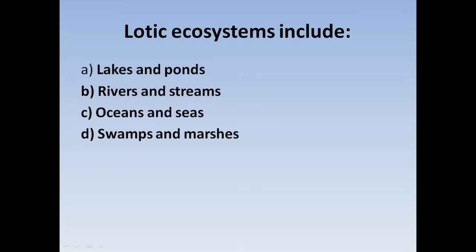Lentic ecosystem includes — Option A: Lakes and ponds, Option B: Rivers and streams, Option C: Ocean and seas, Option D: Swamp and marches. Lentic ecosystems include lakes and ponds. Correct answer: Option A.